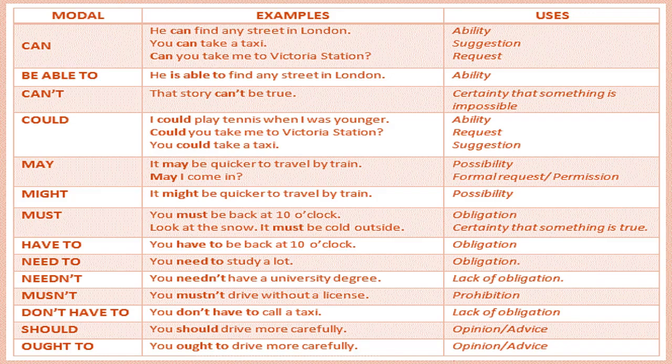Must: 'You must be back at 10 o'clock' (obligation); 'Look at the snow, it must be cold outside' (certainty that something is true). Have to: 'You have to be back at 10 o'clock' (obligation). Need to: 'You need to study a lot' (obligation). Need not: 'You need not have a university degree' (lack of obligation). Must not/mustn't: 'You mustn't drive without a license' (prohibition). Don't have to: 'You don't have to call a taxi' (lack of obligation). Should: 'You should drive more carefully' (opinion or advice). Ought to: 'You ought to drive more carefully' (opinion or advice).